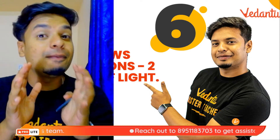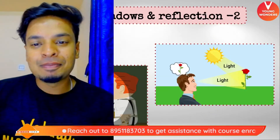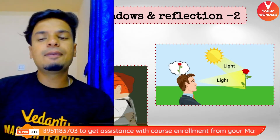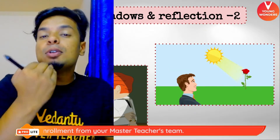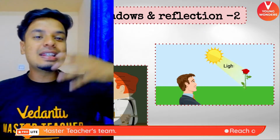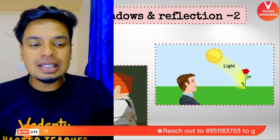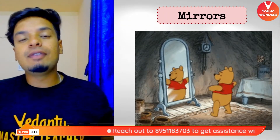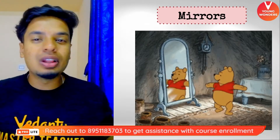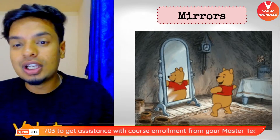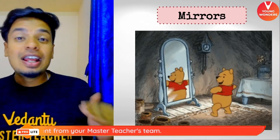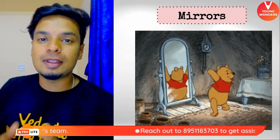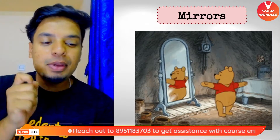Today's class is a short class — we'll be learning about reflection of light. Reflection is when light falls on non-luminous objects around us. I am a non-luminous object, but you guys are able to see me because light is falling on my face and my face is reflecting that light to you. Every morning when we stand in front of the mirror, we are able to see ourselves inside the mirror because of reflection.